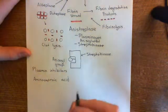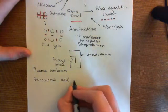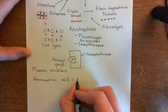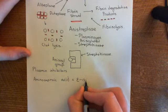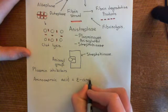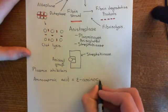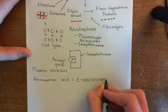The full name for aminocaproic acid is epsilon aminocaproic acid, but often people just abbreviate it to aminocaproic acid.